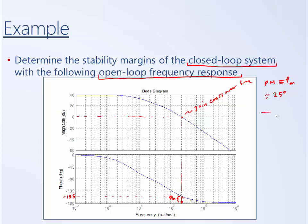Similarly, we can try to look at the gain margin. To assess gain margin, we look at where the phase crosses minus 180 degrees. This system's frequency response phase lag approaches minus 180 degrees, but it never actually crosses minus 180 degrees. So there is no phase crossover frequency.